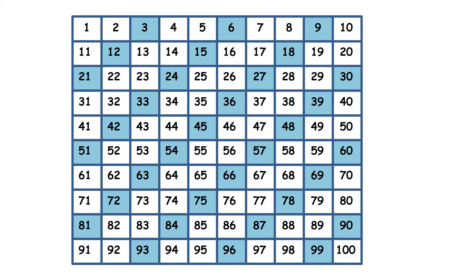Here are all of our multiples of three up to a hundred, and here are all our multiples of six up to a hundred. You can see that all the odd multiples of three — the multiples of three with units digits of one, three, five, seven, or nine — have disappeared. But all the even multiples of three are always also multiples of six.